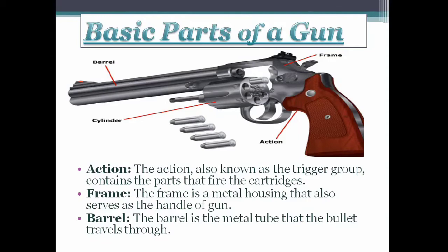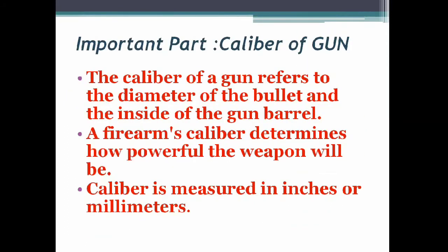The third part is the barrel — the metal tube that the bullet travels through. The fourth and most important part is the caliber of the gun. The caliber refers to the diameter of the bullet and the inside of the gun barrel. A firearm's caliber determines how powerful the weapon will be, and it is measured in inches or millimeters.